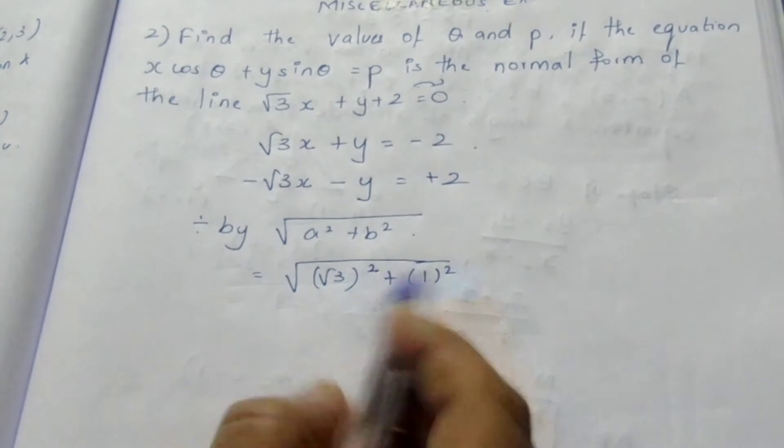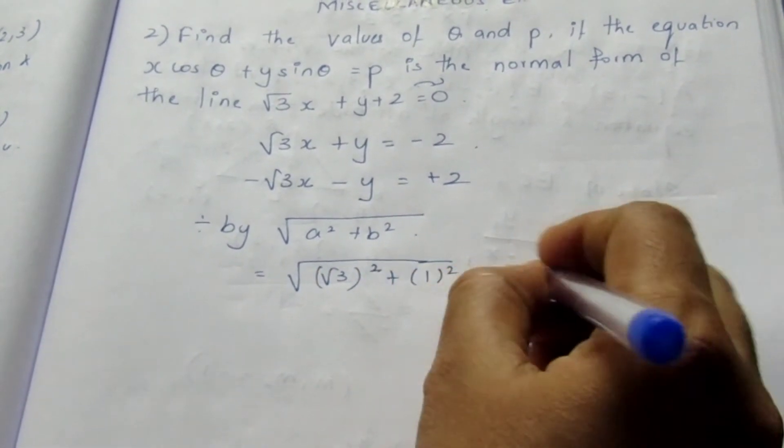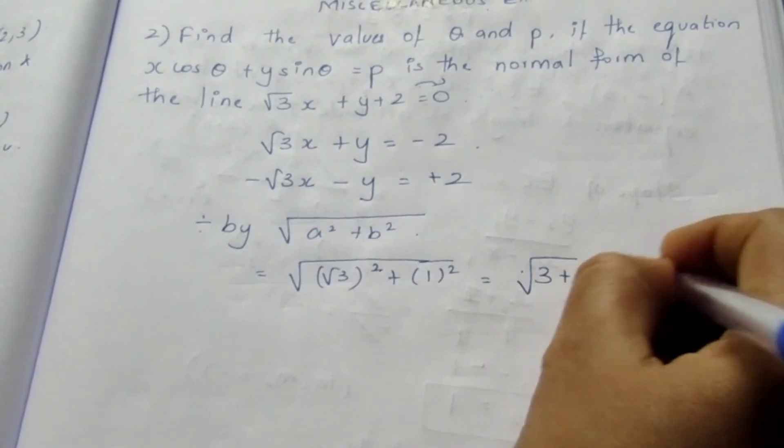I have taken the sign. This becomes 3 plus 1 root 4 equal to 2.